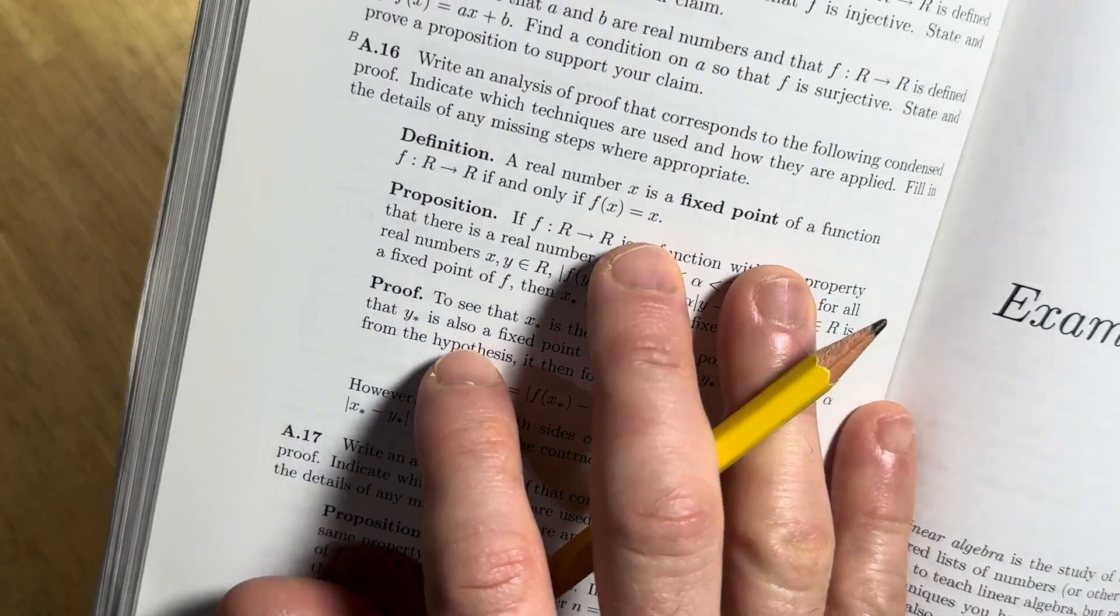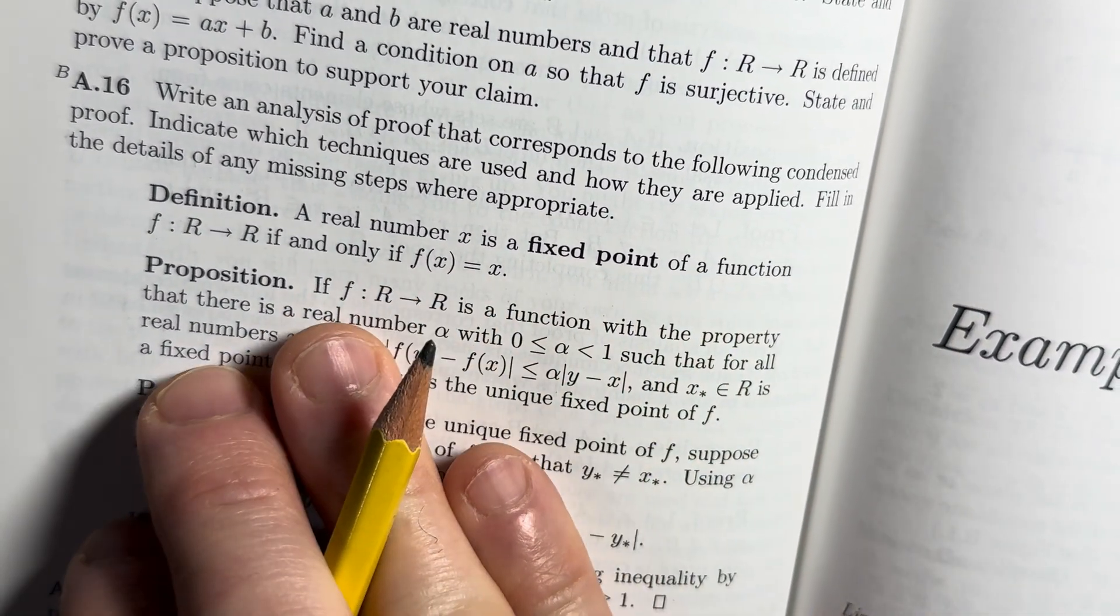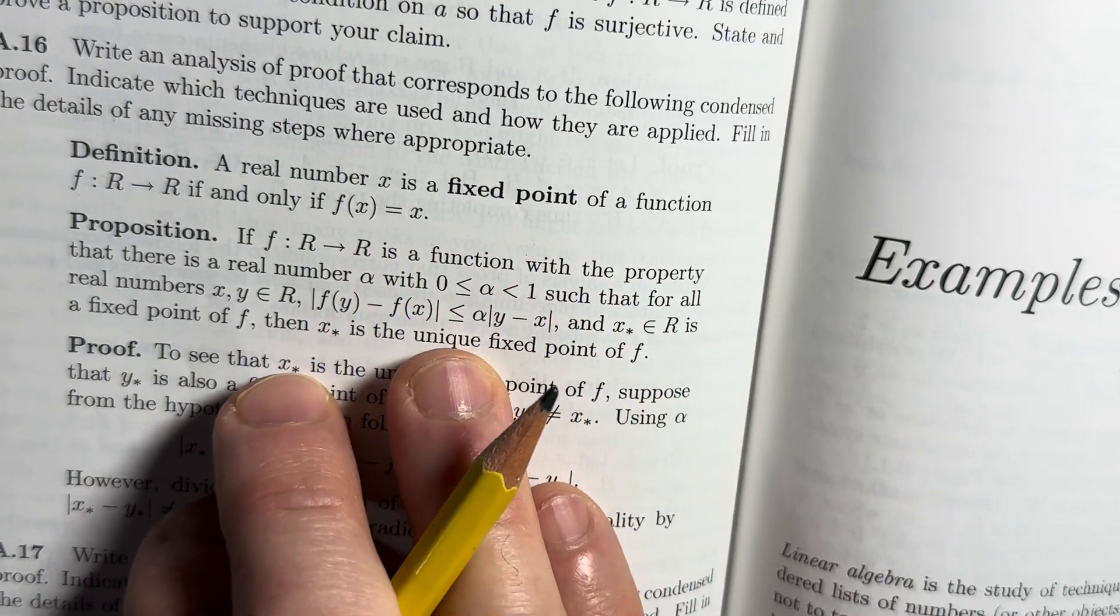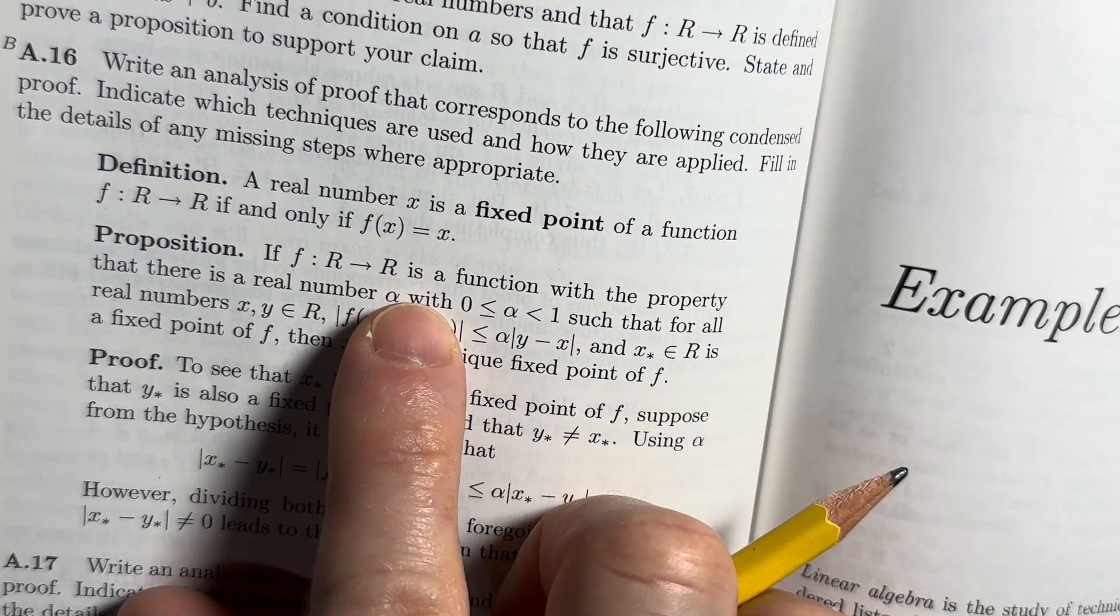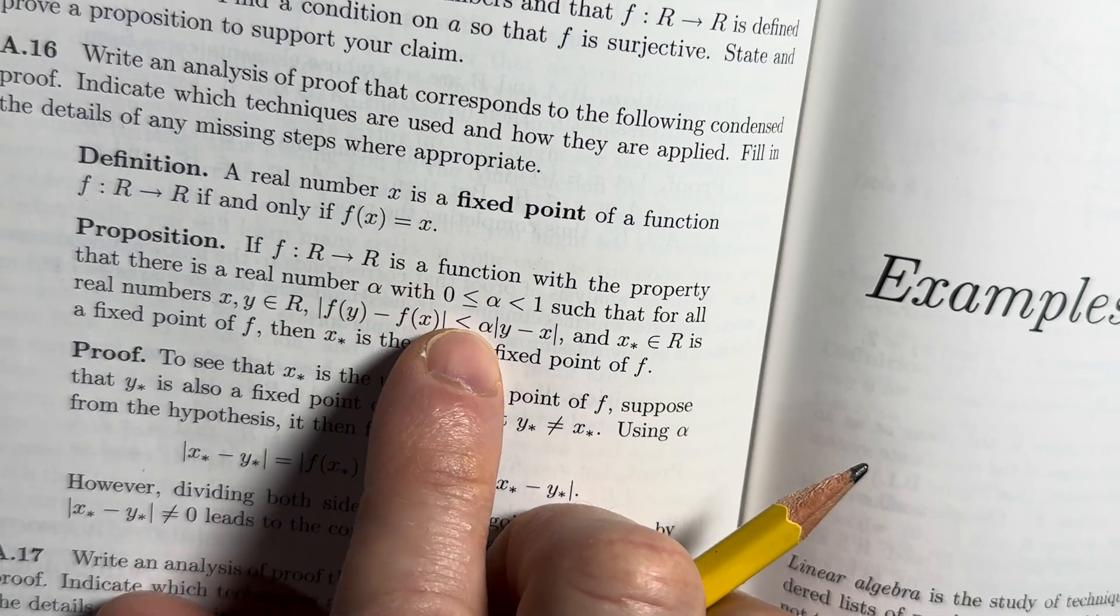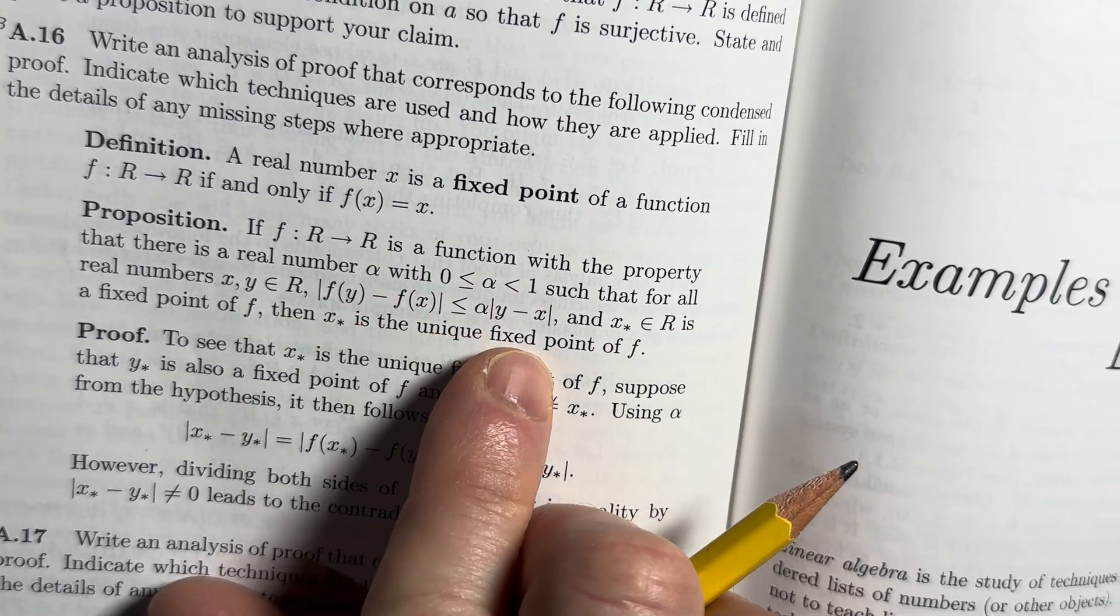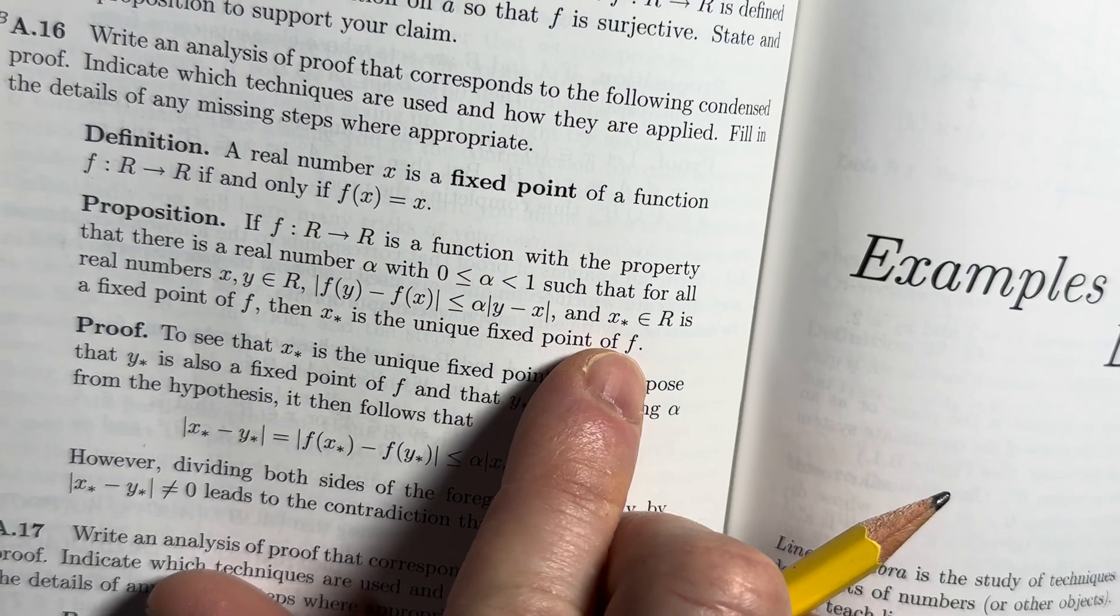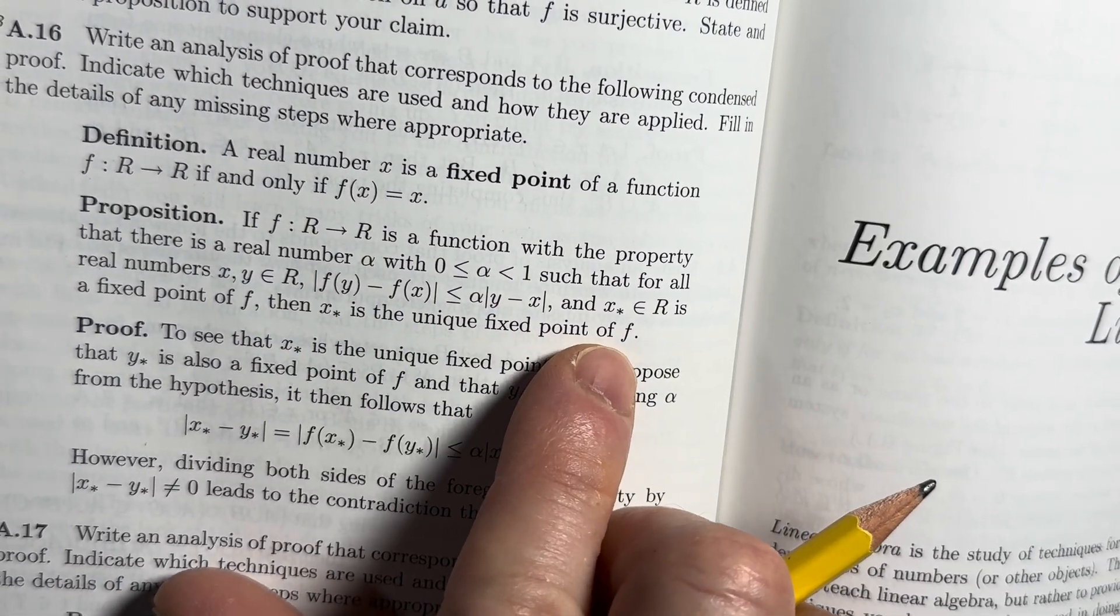Oh, this is really cool. We were just talking about fixed points. Look, a real number x is a fixed point of a function f from R to R, if and only if f of x equals x. And then here's a proposition. If you have a function from R to R, with the property that there's a real number alpha between 0 and 1, such that this is true, and this is a fixed point of f, then this is a unique fixed point of f. Okay, interesting.